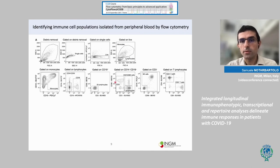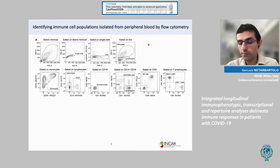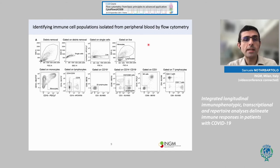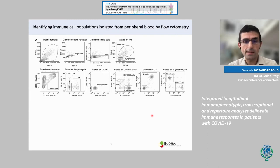I want to remind you that all this was done in a single staining. Using the BD FACSymphony, for instance, you can measure many parameters at the same time — in this case we used an 18–20 color staining panel.